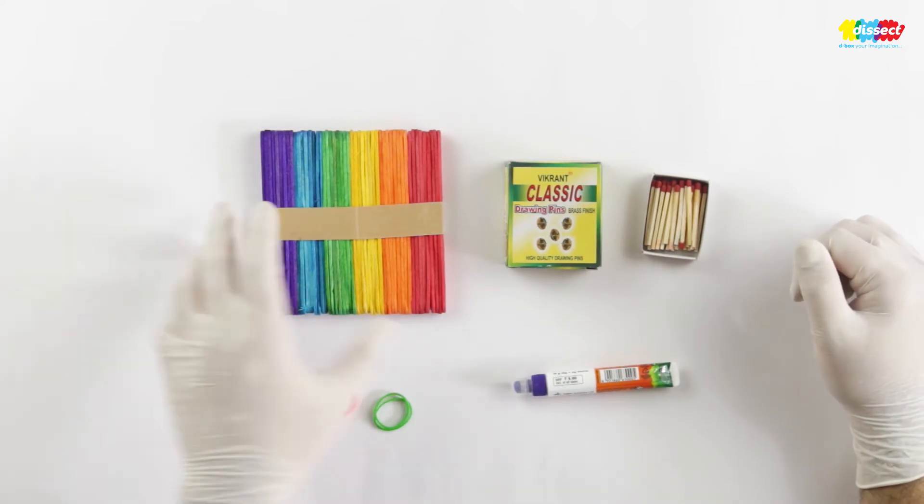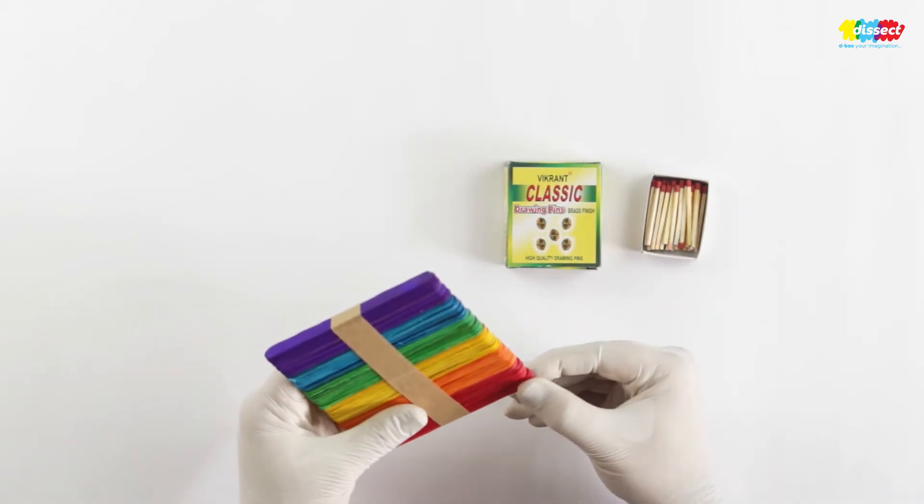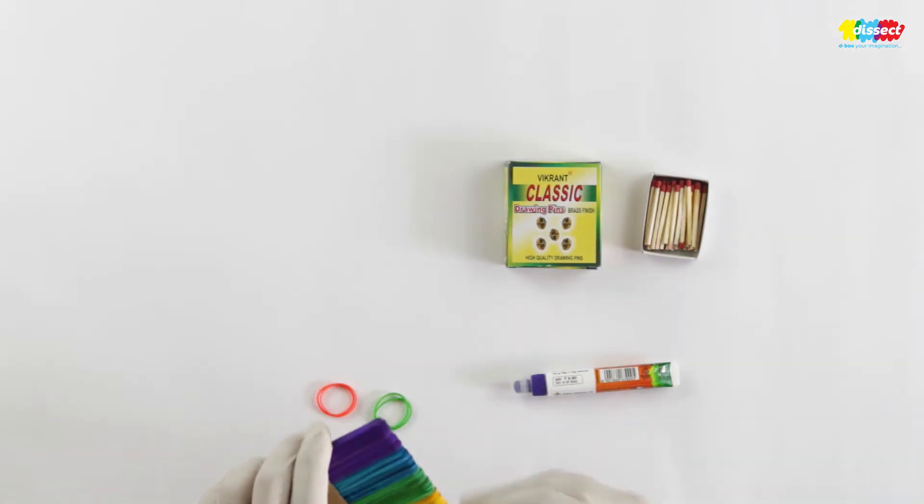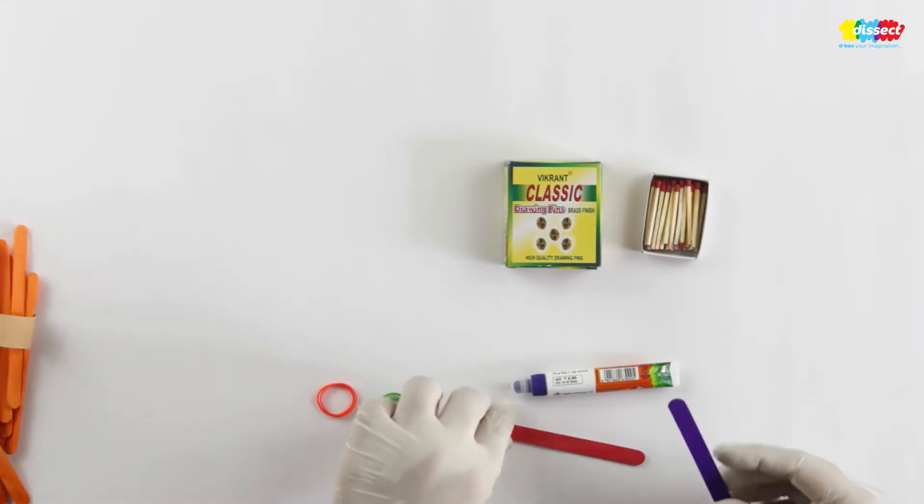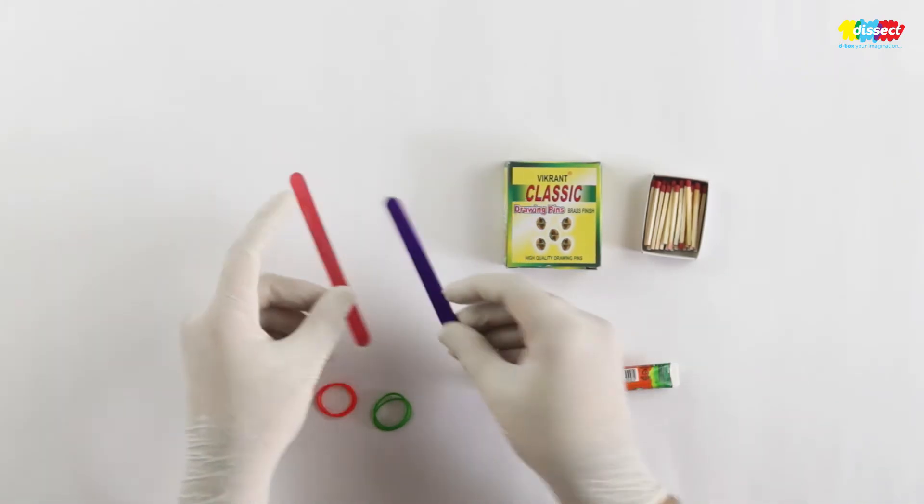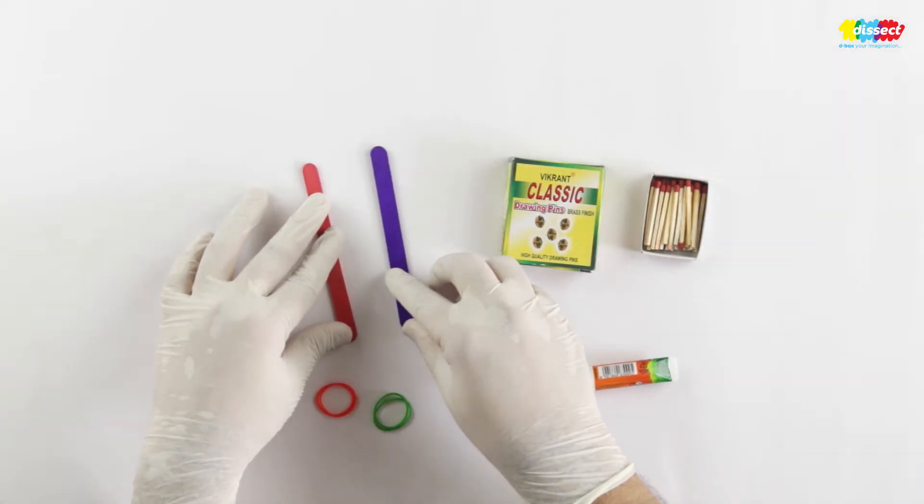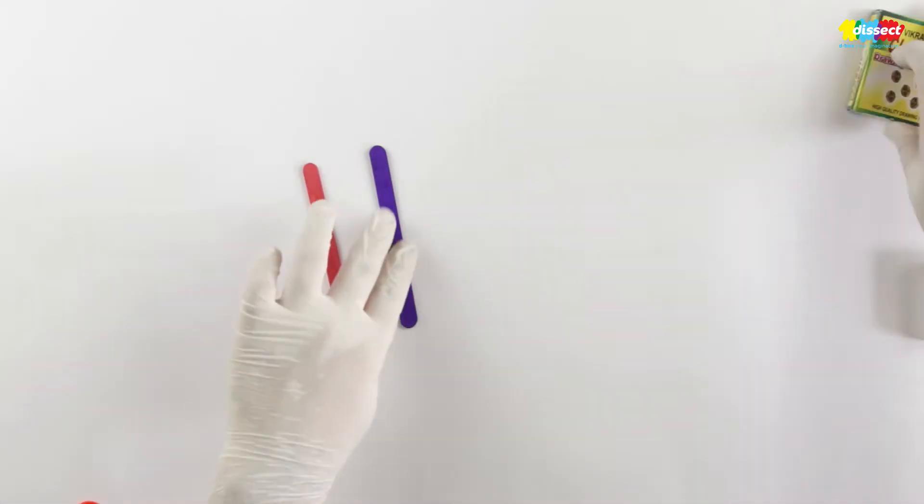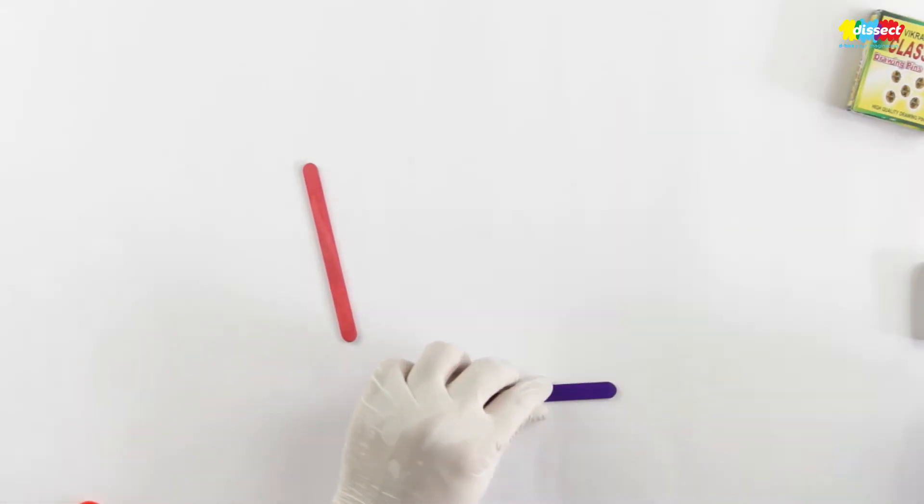Now let's take a couple of ice cream sticks. We have two sticks here. What we are going to do is take one stick and we will fix five mat sticks which will represent fingers.